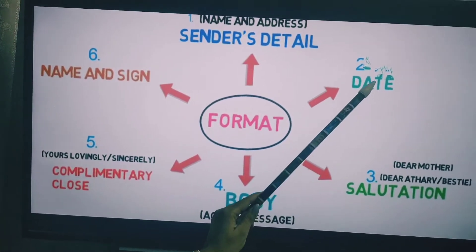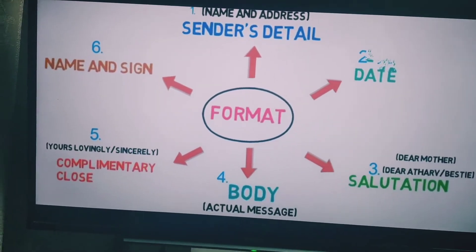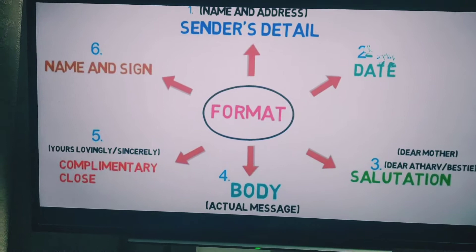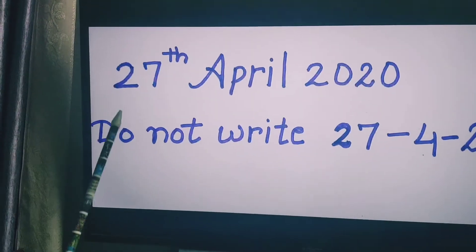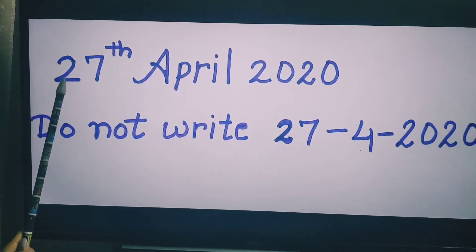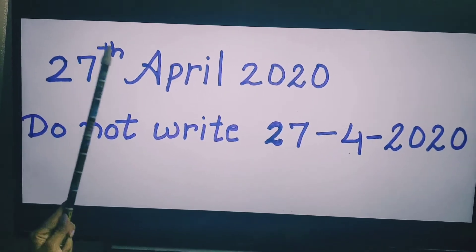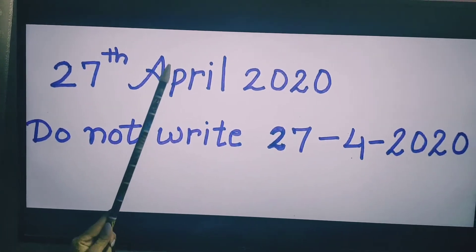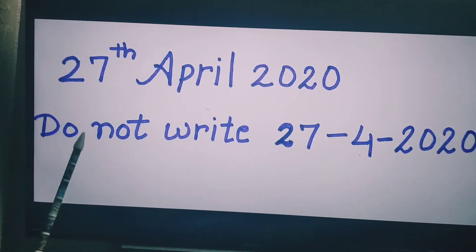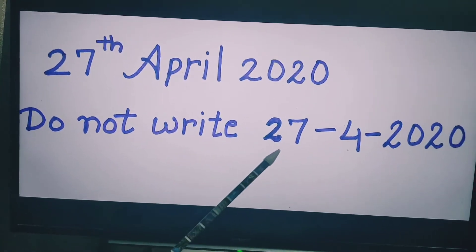The second part is the date. The date should be written properly — for example, suppose the date is 27th April 2020. Don't write the date in a shortened or informal numeric format.